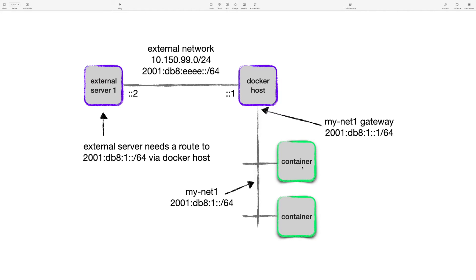With v6, the container sends an ICMPv6 echo request to an address on 2001:db8:eeee::/64. It hits the Docker host gateway, but Docker does NOT perform NAT for v6 — it forwards with the original source address. The external server receives the traffic but doesn't know how to route back to the internal container network, so there's no reply. Pings from containers work with v4 due to NAT, but not with v6 — a nuance worth knowing that the documentation doesn't explicitly spell out.